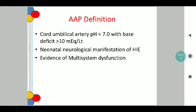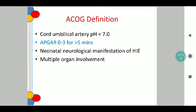The AAP definition of perinatal asphyxia is defined as a triad of three components: cord umbilical artery pH less than 7 with a base deficit of more than 10 milliequivalents per litre, neonatal neurological manifestation of hypoxic ischemic encephalopathy, and evidence of multisystem dysfunction. The ACOG definition comprises cord umbilical artery pH less than 7, an additional component of APGAR score of 0 to 3 for more than 5 minutes, with the other two points remaining the same — neonatal neurological manifestations of HIE and multiple organ involvement.